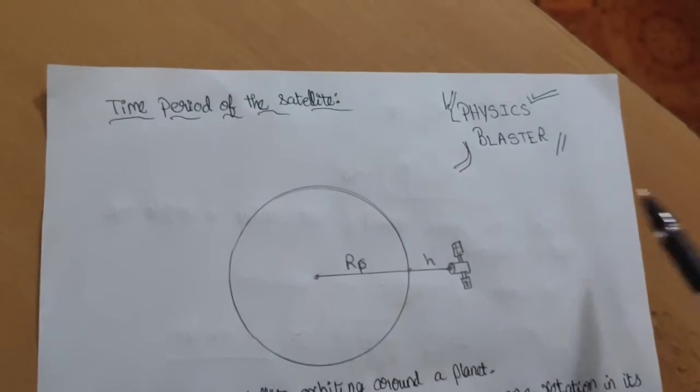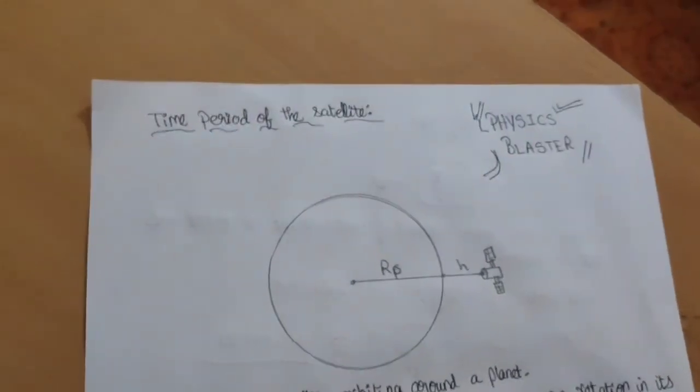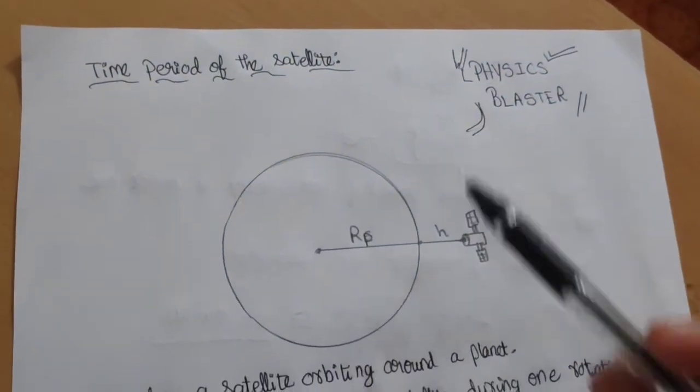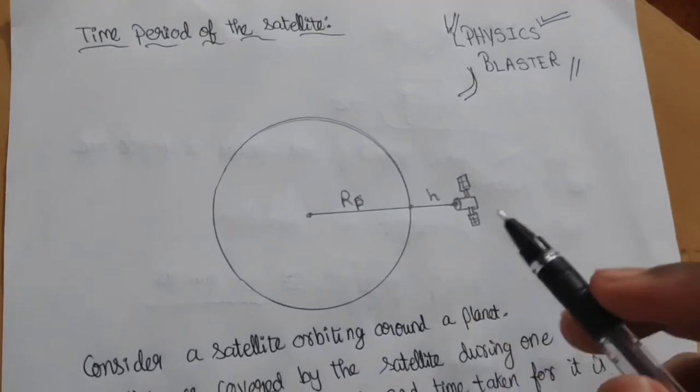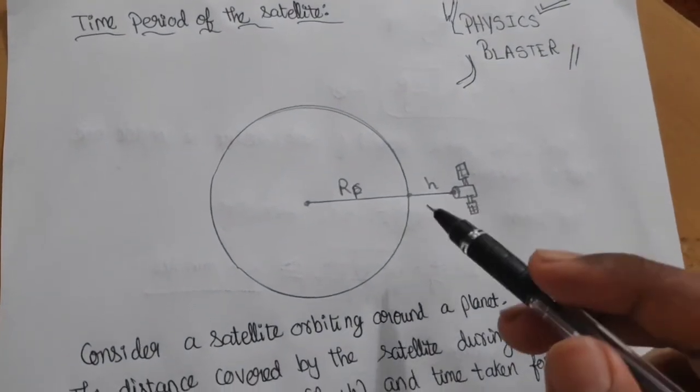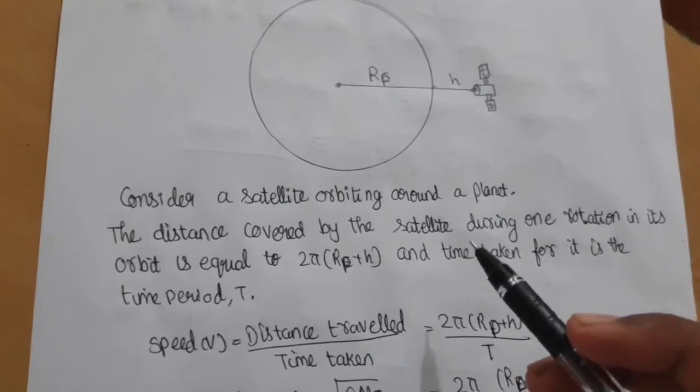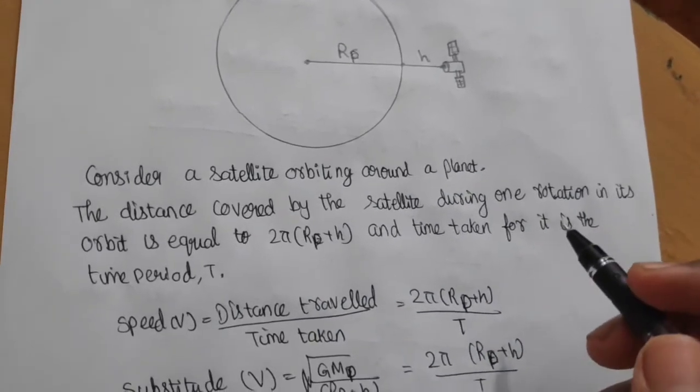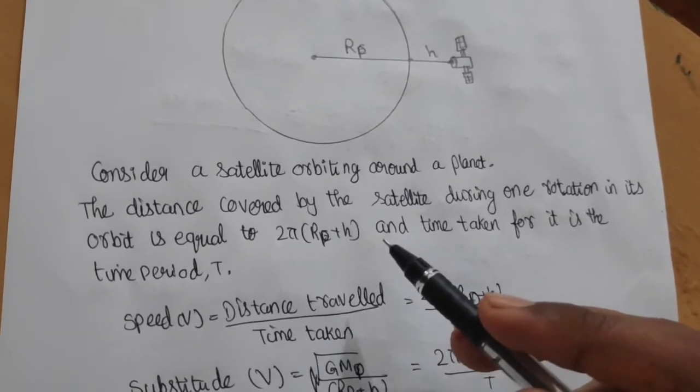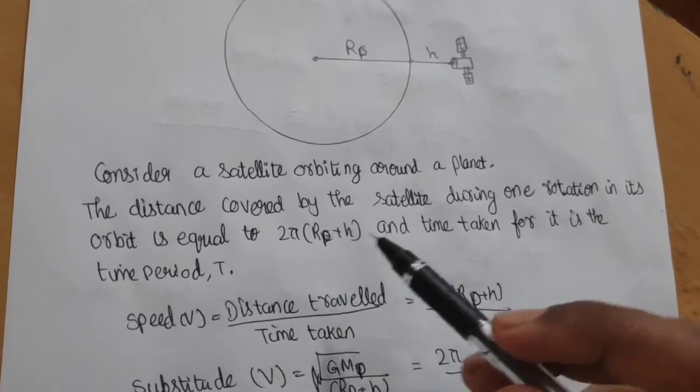Hi everyone, welcome to Physics Plaster. Today we're going to see about the time period of a satellite. Consider a satellite orbiting around a planet at height h from the surface of the planet. The distance covered by the satellite during one rotation is equal to 2π(Rp+h), which comes from the circumference of the circle because the path of the satellite is circular.